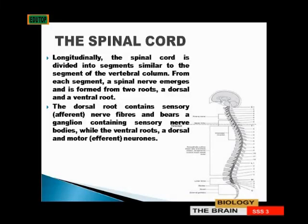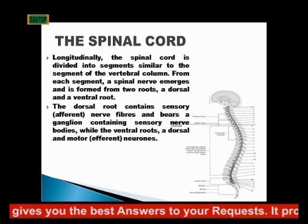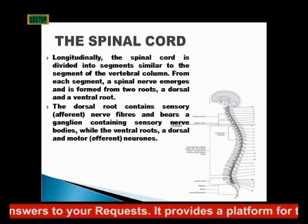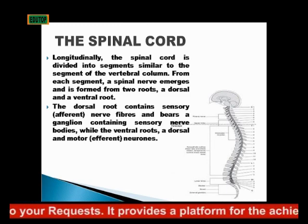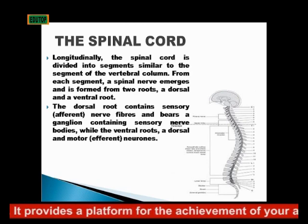The spinal cord is divided into segments similar to the segments of the vertebral column. From each segment, a spinal nerve emerges and is formed from two roots: a dorsal and a ventral root. The dorsal root contains sensory or afferent nerve fibers and brings a ganglion containing sensory nerve cell bodies, while the ventral root has the motor efferent neurons.